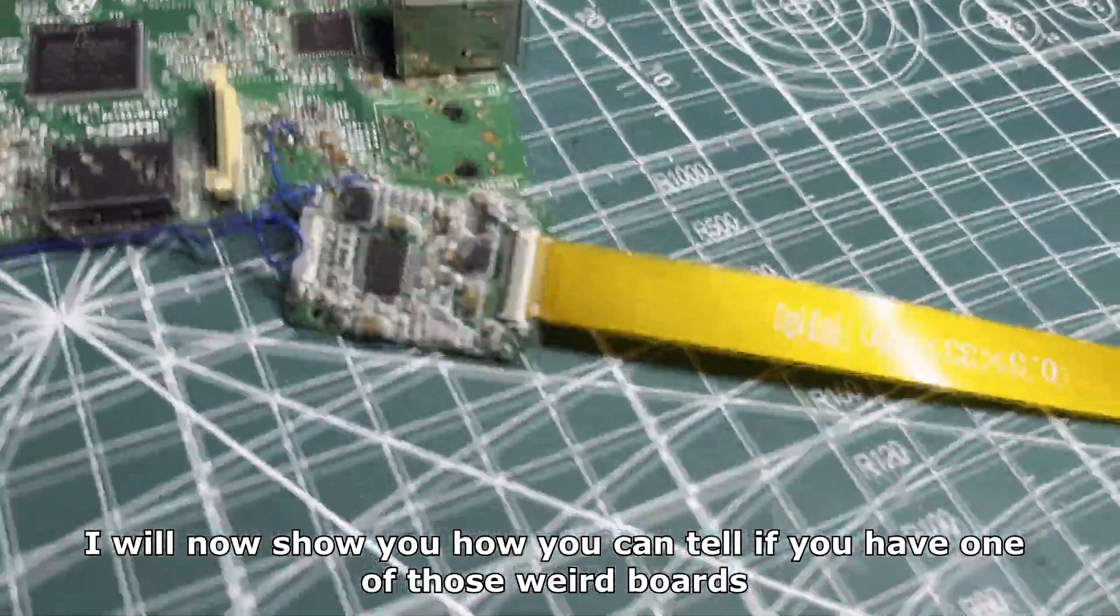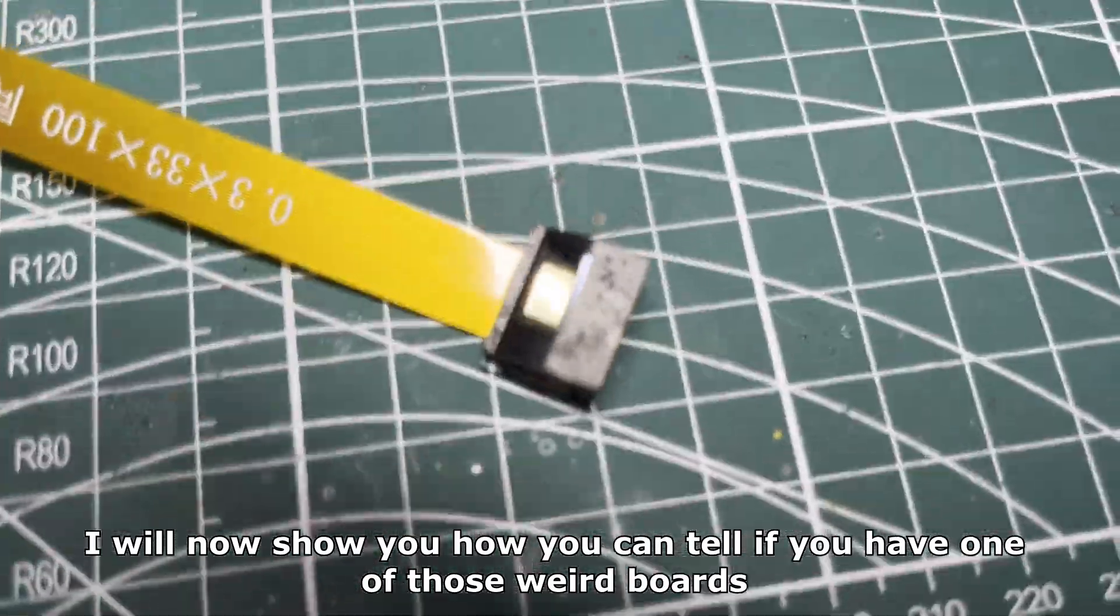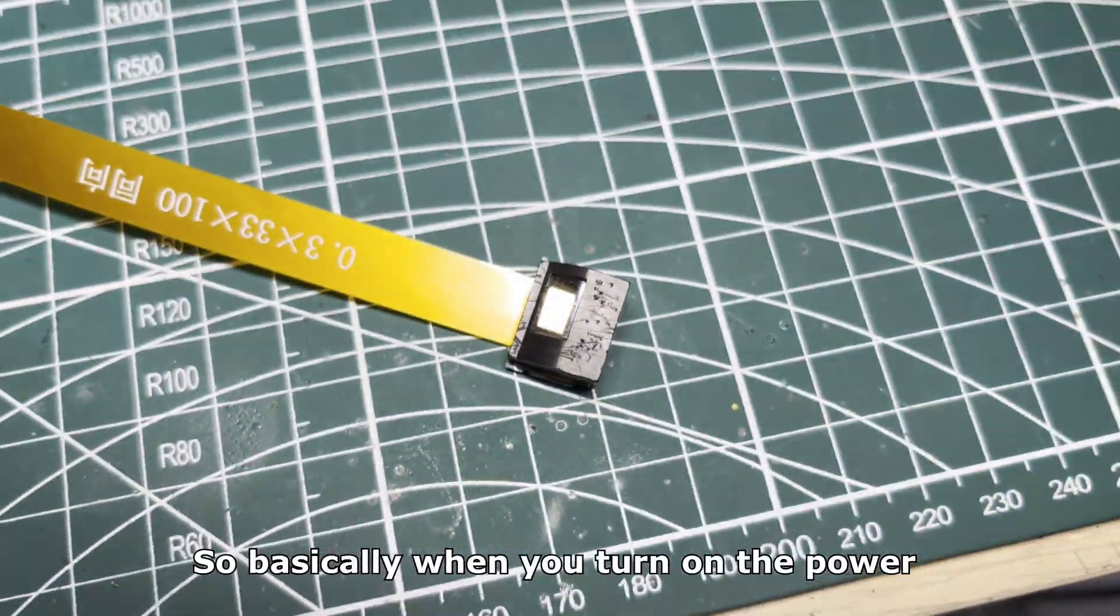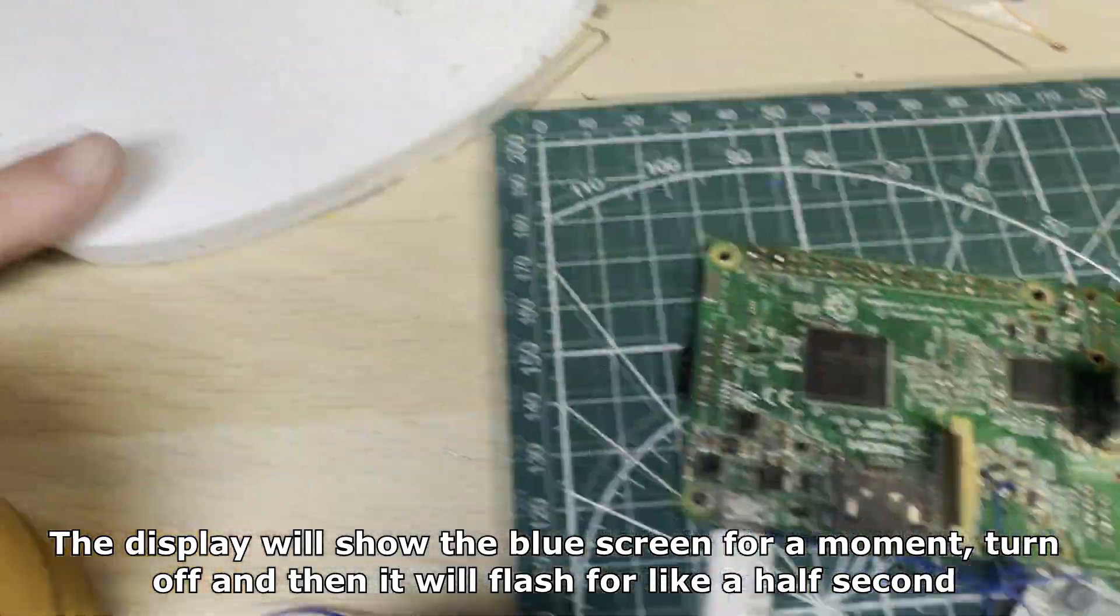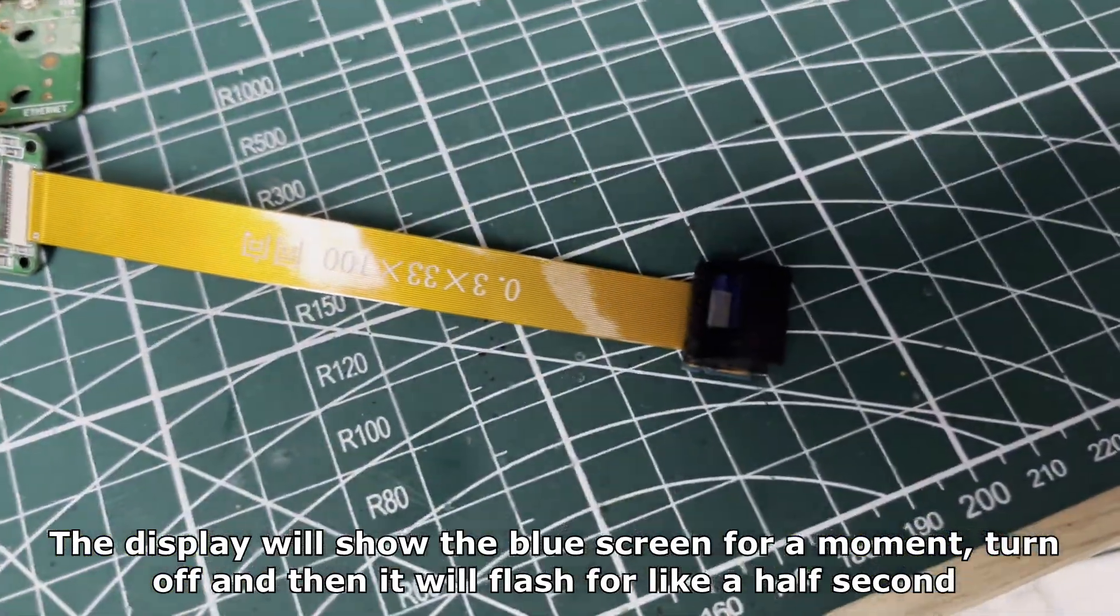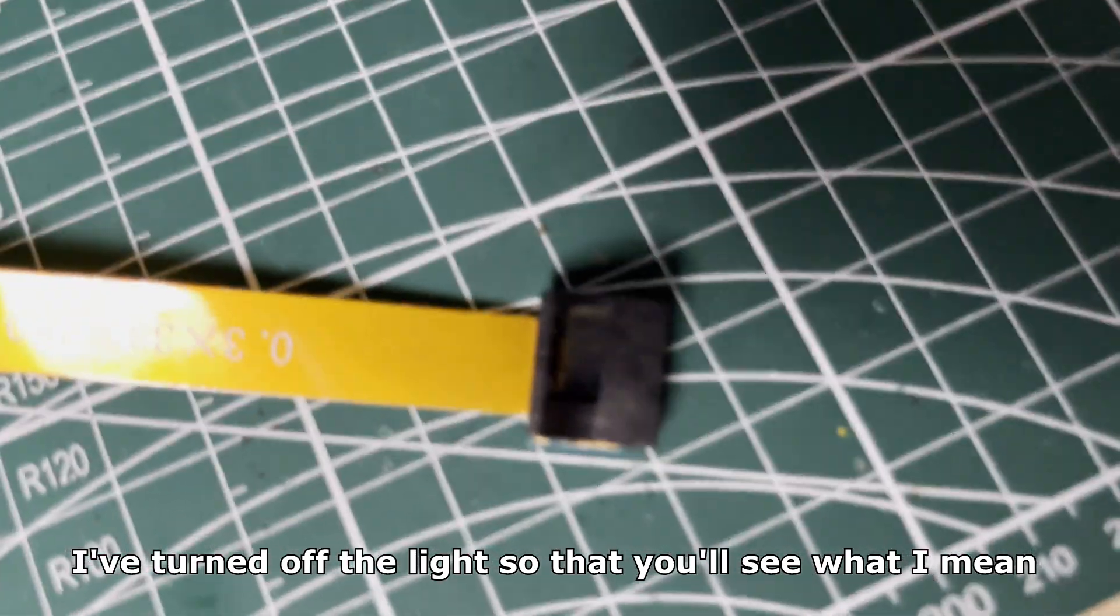I will now show you how you can tell if you have one of those weird boards. So basically when you turn on the power, the display will show the blue screen for a moment, turn off, and then it will flash for like a half second. I've turned off the light so that you'll see what I mean.